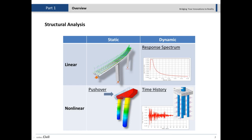The two types of dynamic analysis — response spectrum and time history — are used to find the demand on the structure: total displacements, deformations, internal forces, and the structure's response to loading. Pushover analysis, on the other hand, finds the capacity of the structure. Today we're going to focus just on bridges, specifically the time history analysis.